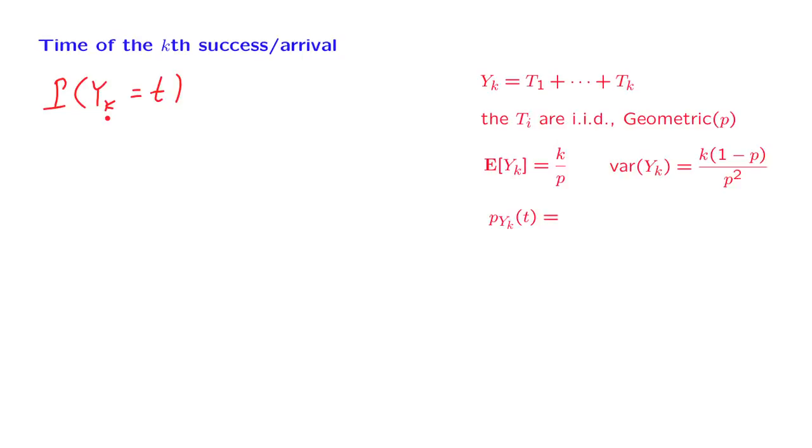This is a random variable that can take different values t. And we want to find the probabilities of those different values t. So think of k as being fixed, and t as a parameter that varies. And we want to carry out this calculation for all possible choices of t.